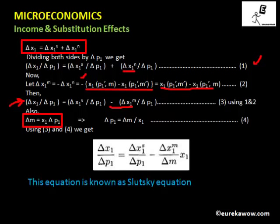Substituting delta P1 from this expression into equation 3, we obtain the Slutsky equation: delta X1 / delta P1 equals delta X1^S / delta P1 minus (delta X1^M / delta M) times X1. The left-hand side shows the change due to the price effect; on the right-hand side, the first term corresponds to the substitution effect and the second term corresponds to the income effect. This tells us how demand changes because of changes in prices — whether positive or negative.